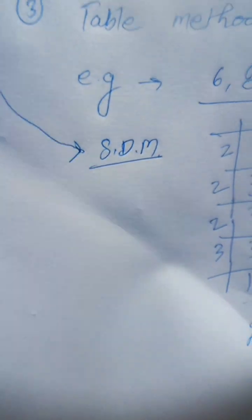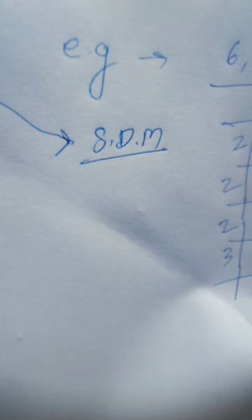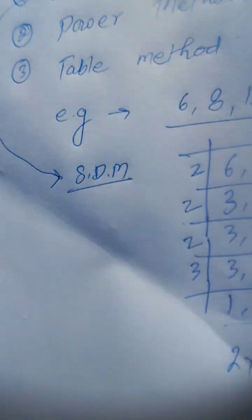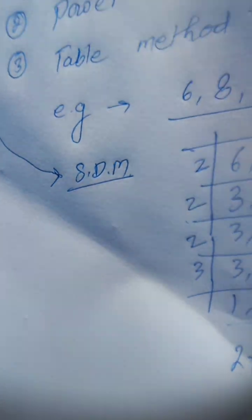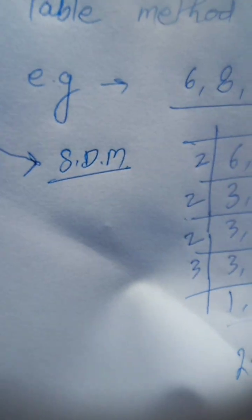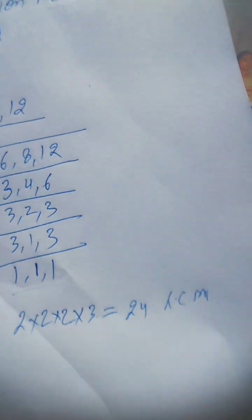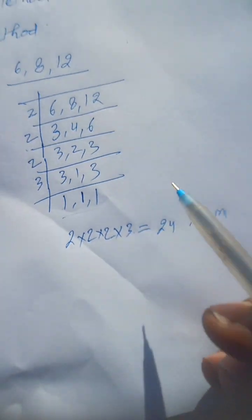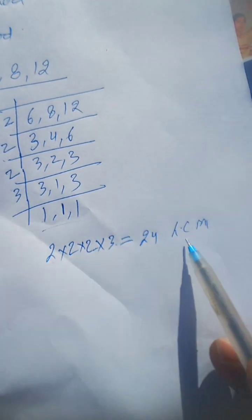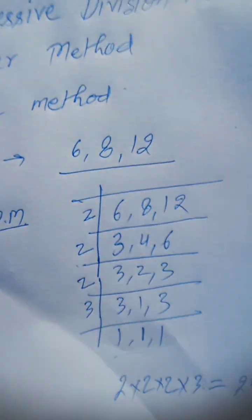Now required LCM will be 2 × 2 × 2 × 3. Here 2, 2, 2, 3 equals 2 × 2 = 4, 2 × 8, 3 × 24. This is your required LCM. 2 × 2 × 2 × 3 = 24 will be required LCM.